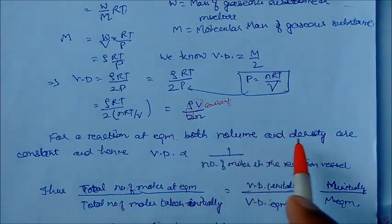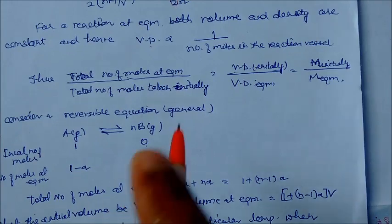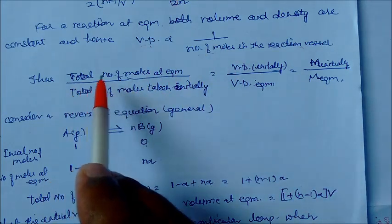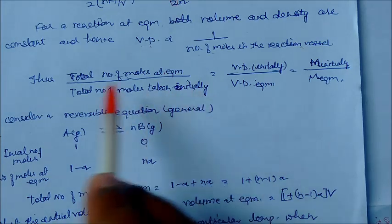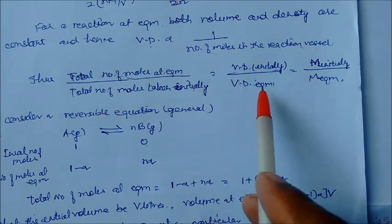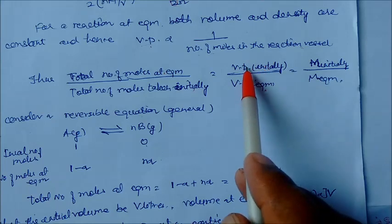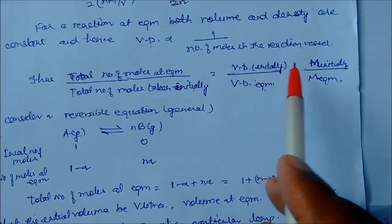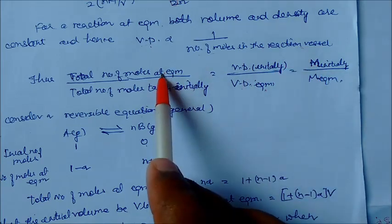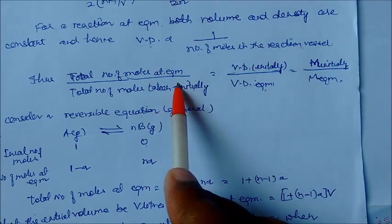So at equilibrium, when both volume and density are constant, vapor density is inversely proportional to the number of moles in the reaction vessel. This gives us: (total moles at equilibrium) / (total initial moles) = D_initial / D_equilibrium. Also, vapor density is directly proportional to molar mass, and inversely proportional to number of moles.